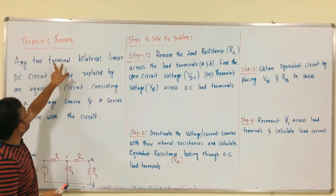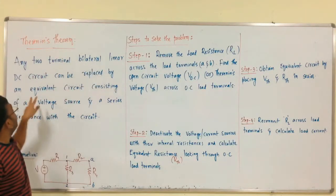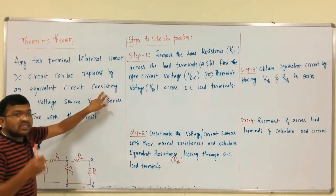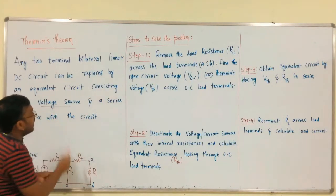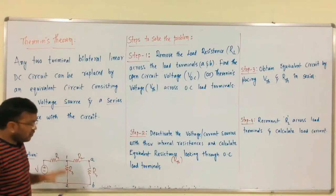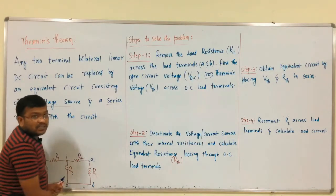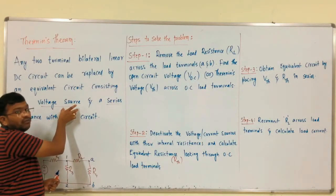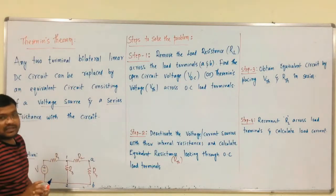Any two-terminal bilateral DC circuit can be replaced by an equivalent circuit which consists of a voltage source and a series resistance with the circuit. So this circuit can be replaced with an equivalent circuit of a voltage source in series with a resistance.